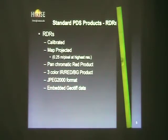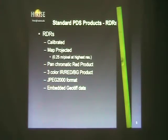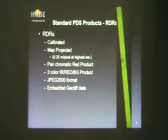These RDRs are calibrated and projected. Depending on the bending modes and various commanding settings on the spacecraft made during the observation, the resolution of the RDRs may be set to 0.25 meters per pixel, half a meter per pixel, or as much as one meter per pixel in some cases. Usually it's 0.25 or half a meter per pixel.